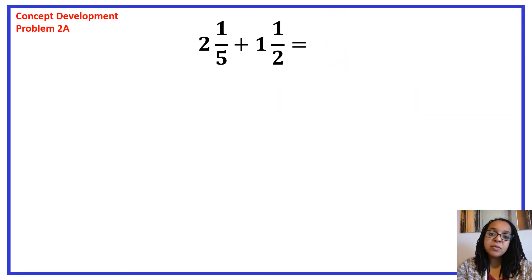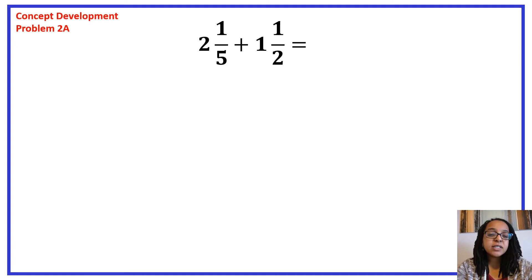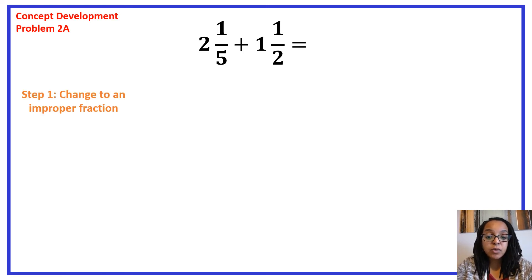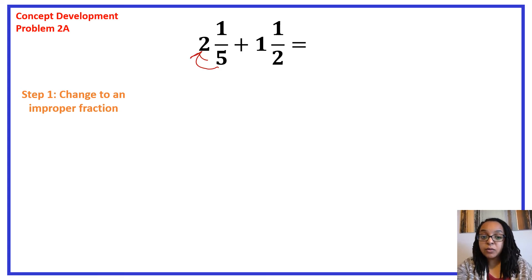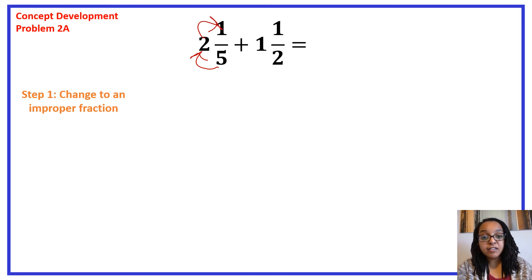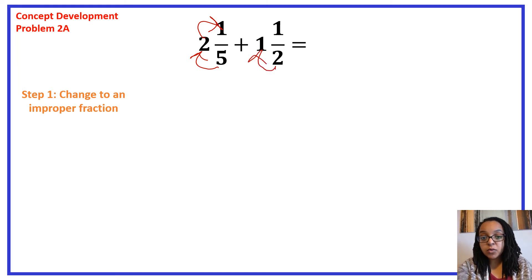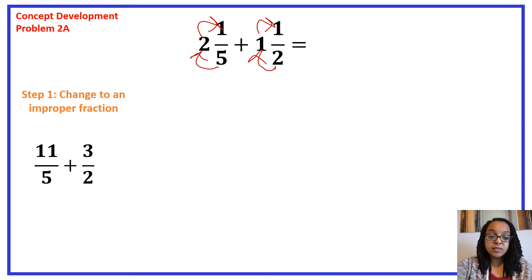Now let's move on to finding the sum of a mixed number plus a mixed number. The concept is the exact same as before — the only difference is that each mixed number must first be changed into an improper fraction. Step one: change the mixed numbers to improper fractions. For 5 and 1 fifth, multiply the denominator 2 by the whole number 5 to get 10, then add the numerator 1 to get 11 fifths. For 1 and 1 half, multiply 2 by 1 to get 2, then add 1 to get 3 halves. Our new problem becomes 11 fifths plus 3 halves.